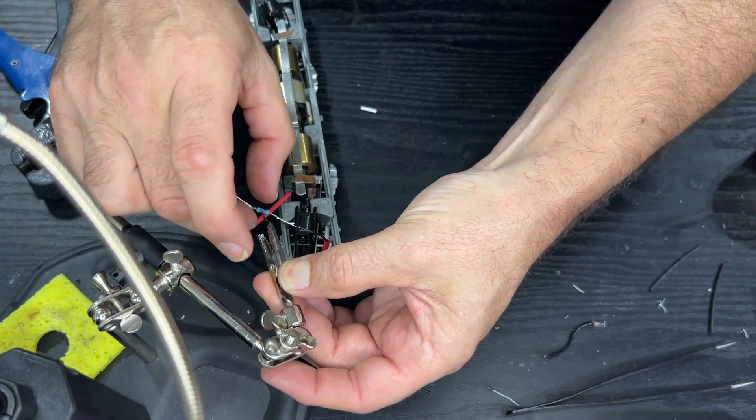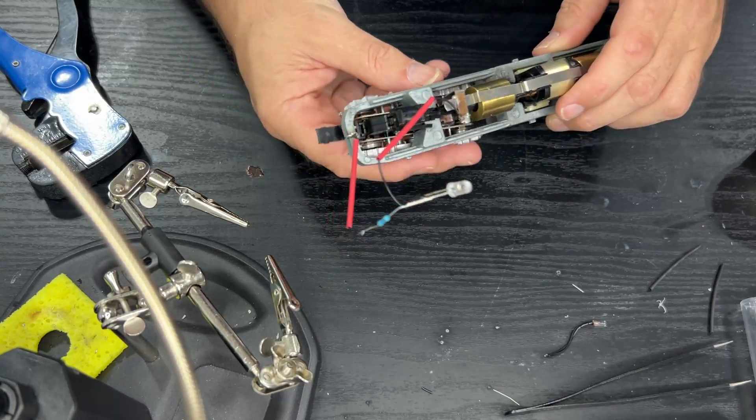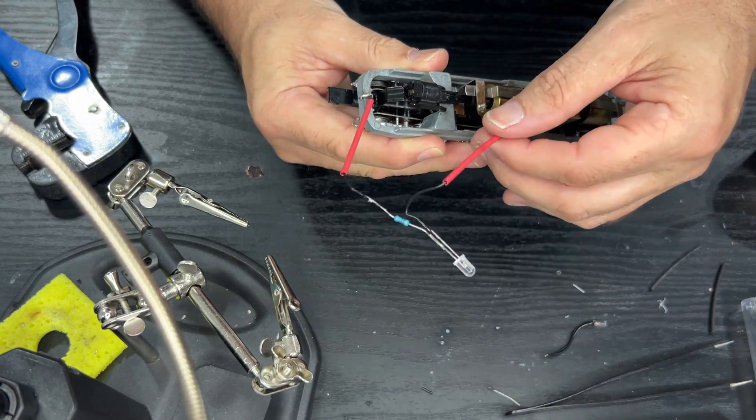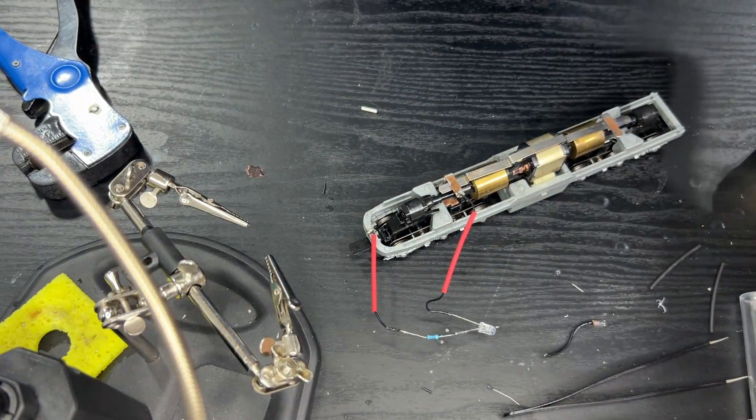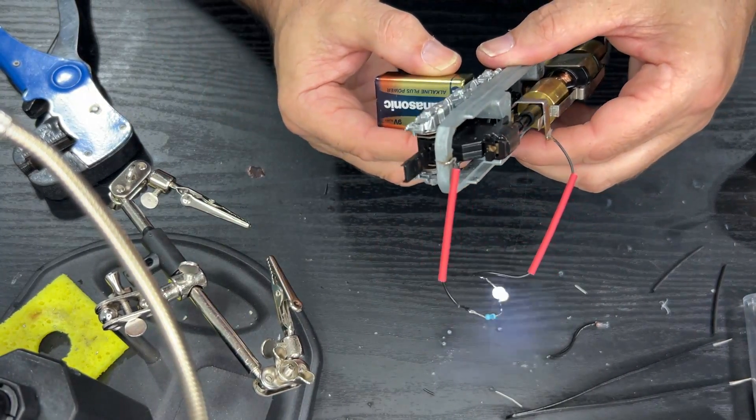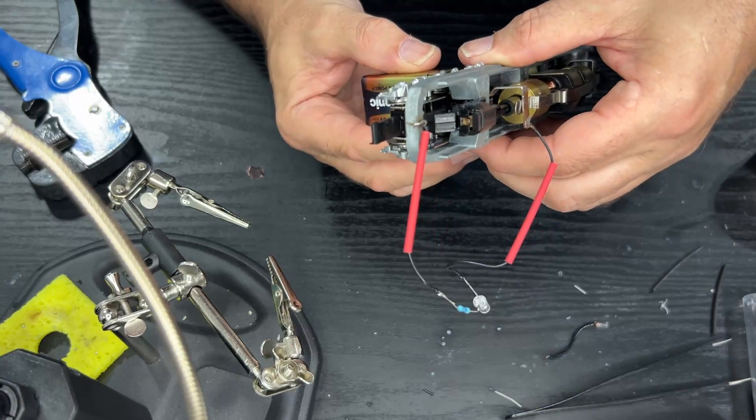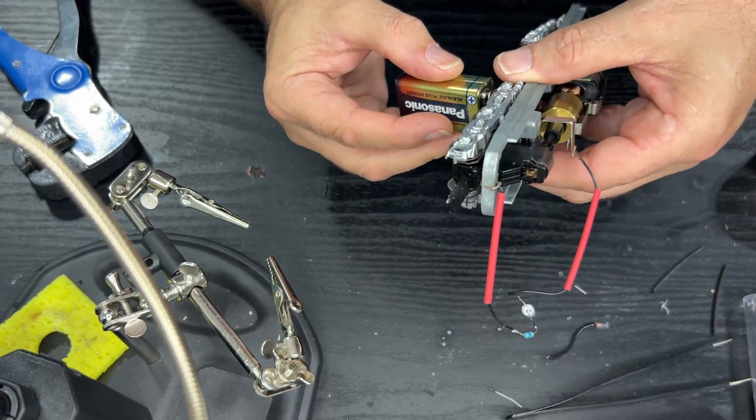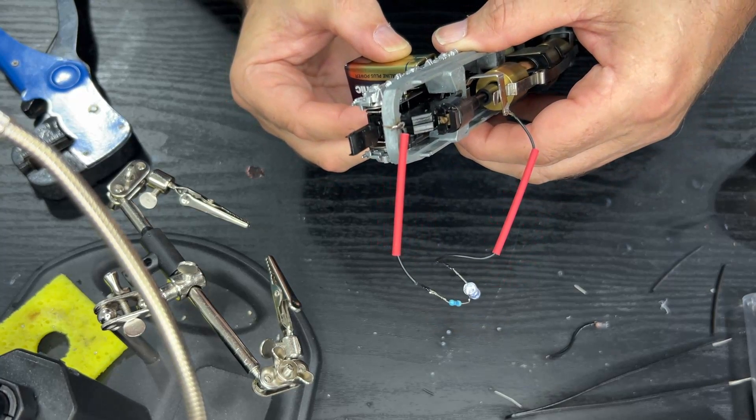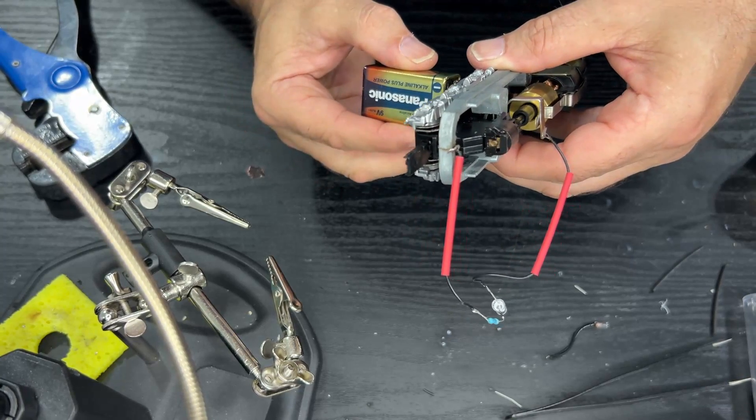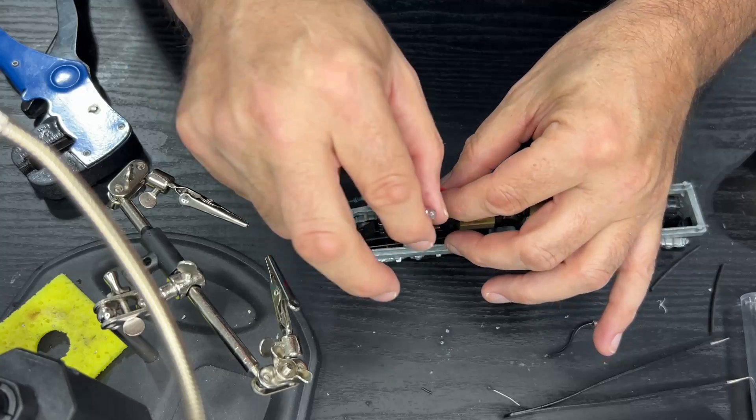Let's do a little check with our battery. And wouldn't you adamant believe it, I've gone the wrong way. I had a 50-50 shot and I got it wrong. Tell you what's weird though, I can see the LED flickering even though it's going forward, but it definitely only comes on properly in reverse. So annoying. Let me swap them around and I'll see you in a sec.